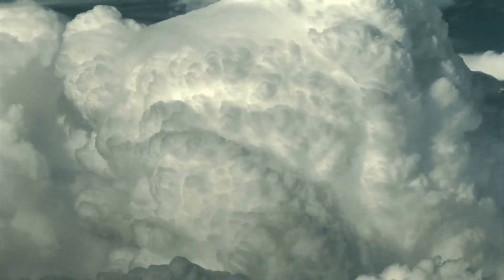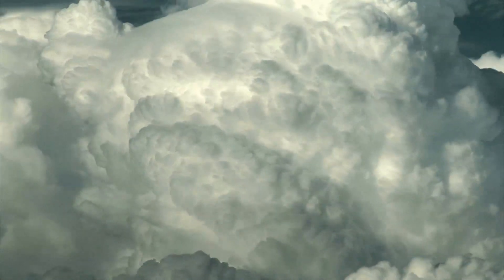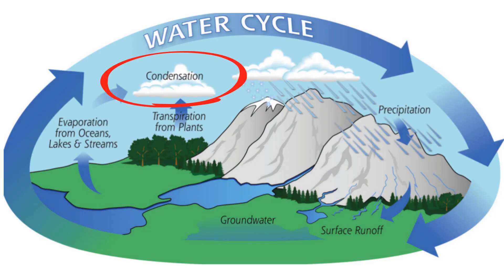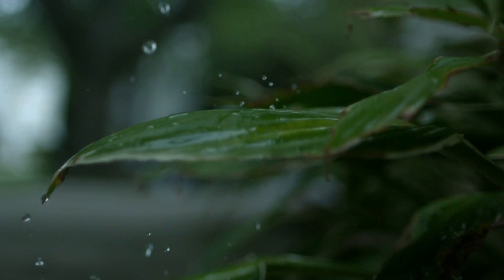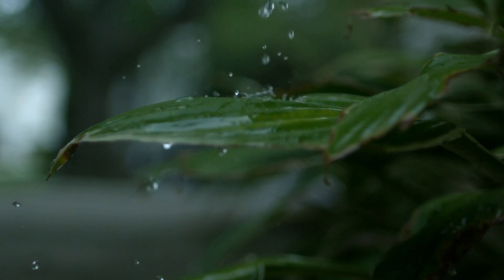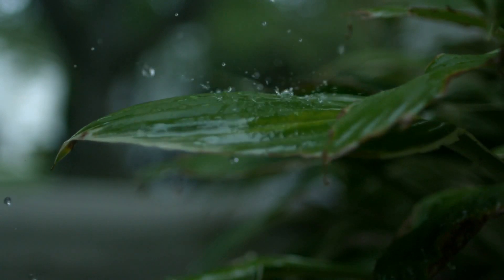This moisture in the atmosphere may be transported around the globe until it returns to the surface as precipitation. Precipitation may take the form of rain, snow, sleet, or hail.